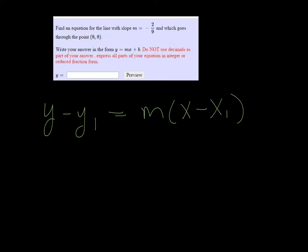So my y₁ is the 8 that they give us there, so y minus 8 equals negative 2 ninths, which is our slope m, and x minus 9, because 9 is our x₁.